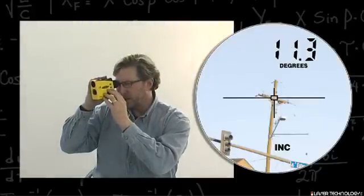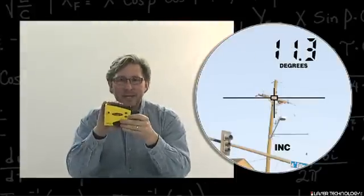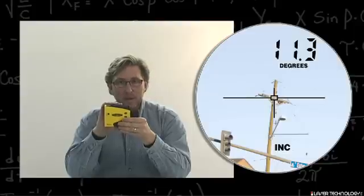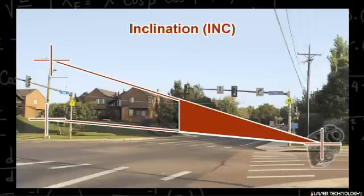Look through your instrument, hit the down arrow, and it will say inclination or INC in the left-hand corner. This is actually the degree of the line that your slope distance shot.